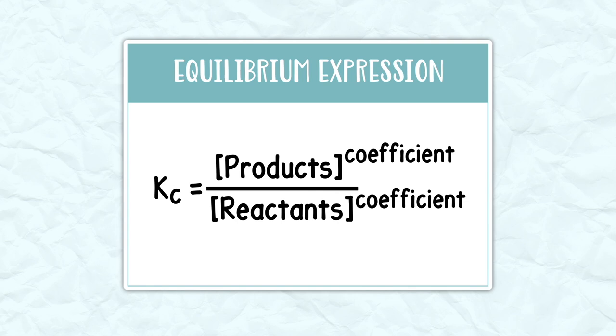The equilibrium expression shows the relationship between the products and reactants, specifically when the reaction is at equilibrium. The equilibrium expression is a ratio between the concentration of the products raised to their coefficients and the concentration of the reactants raised to their coefficients.